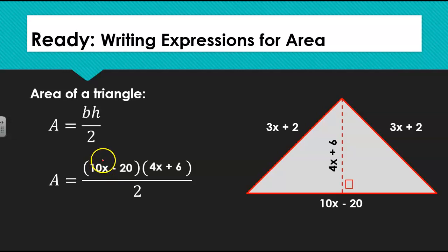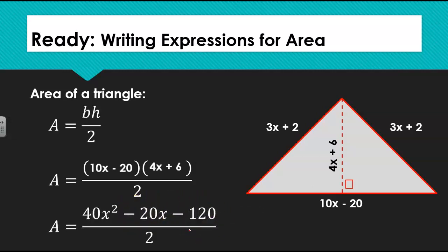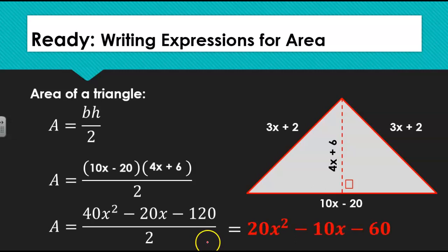We will use the distributive property. We will distribute the first term in our first set of parentheses to each of the terms in our second set of parentheses, then distribute the second term in our first set of parentheses to each of the terms in our second set of parentheses. We notice that we have like terms to combine, and it simplifies. The entire numerator is divided by 2, meaning each term is divided by 2. When we divide each of those terms by 2, we find that the area of the triangle is 20x squared minus 10x minus 60 units squared.